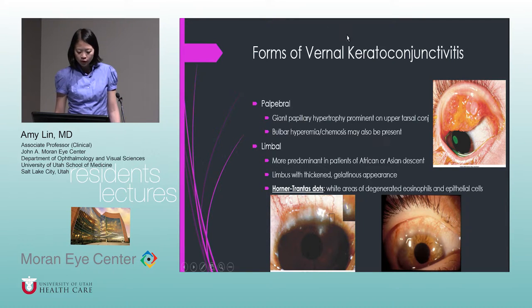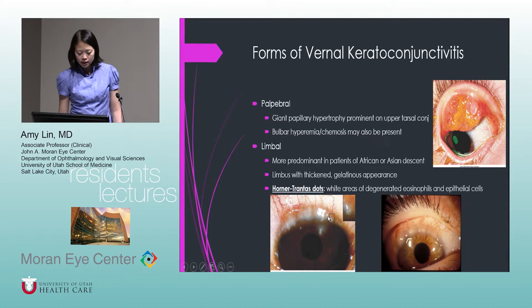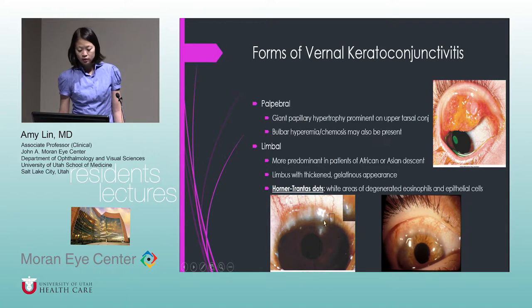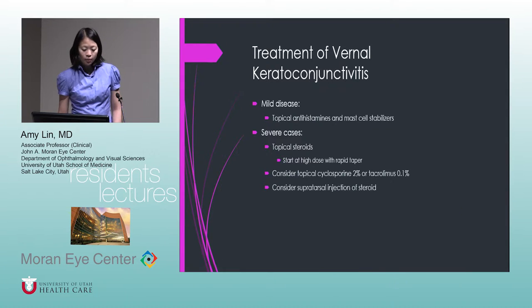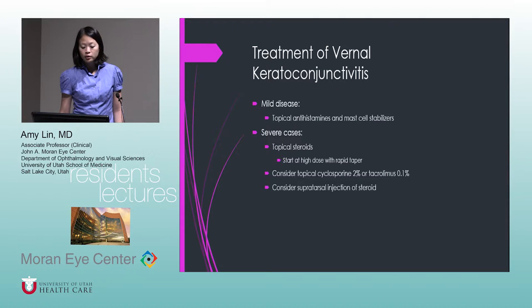Along the limbus, usually in kids of African or Asian descent, there's this gelatinous nodular appearance. Horner-Trantas dots is a buzzword you'll see on tests — these are small white areas of degenerated eosinophils and epithelial cells, typically seen on the superior limbus but also all the way around 360 degrees. For mild disease, use topical antihistamines and mast cell stabilizers.